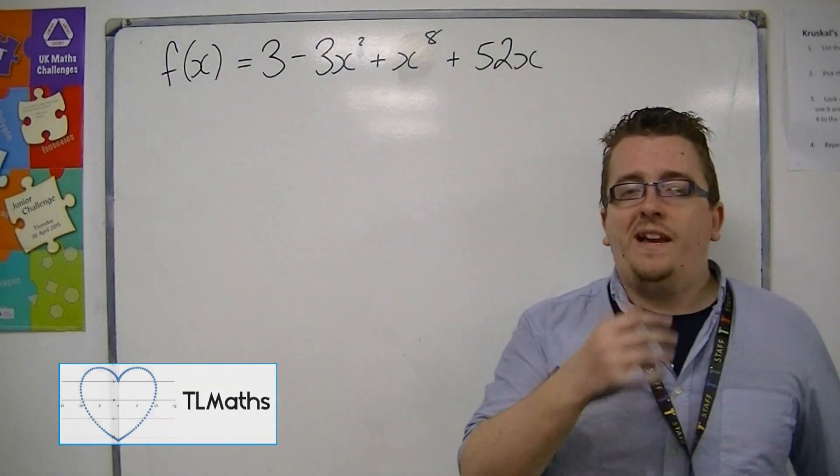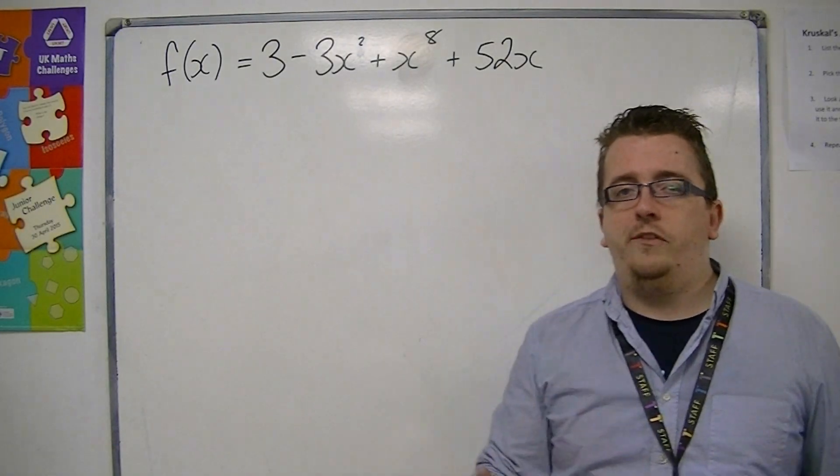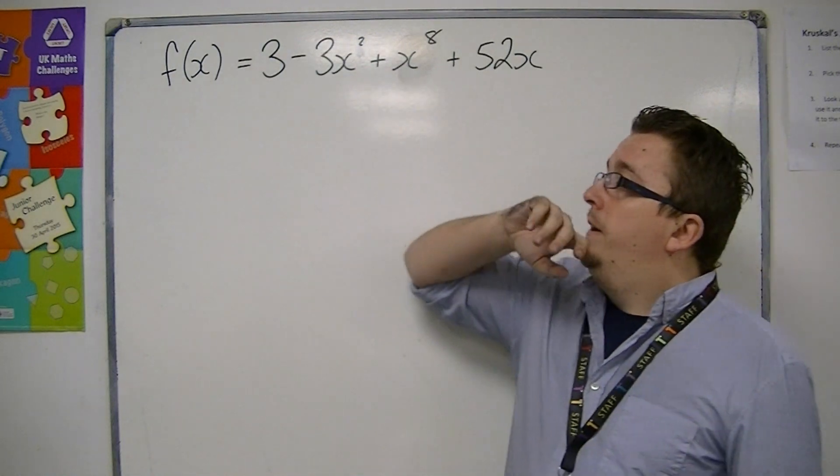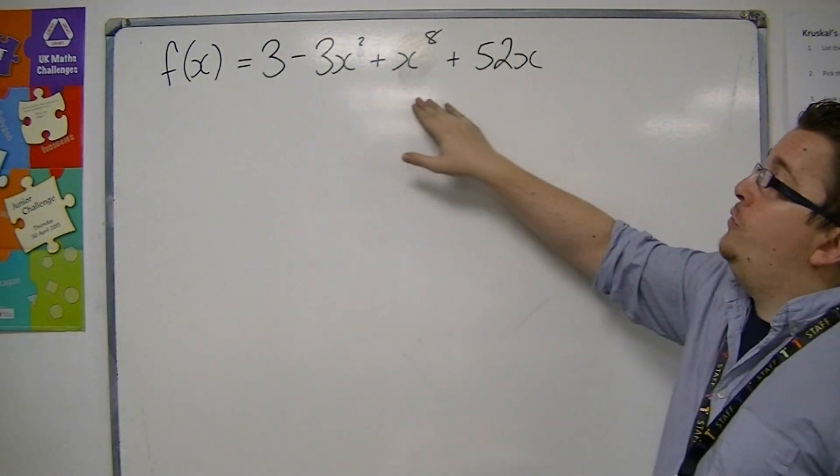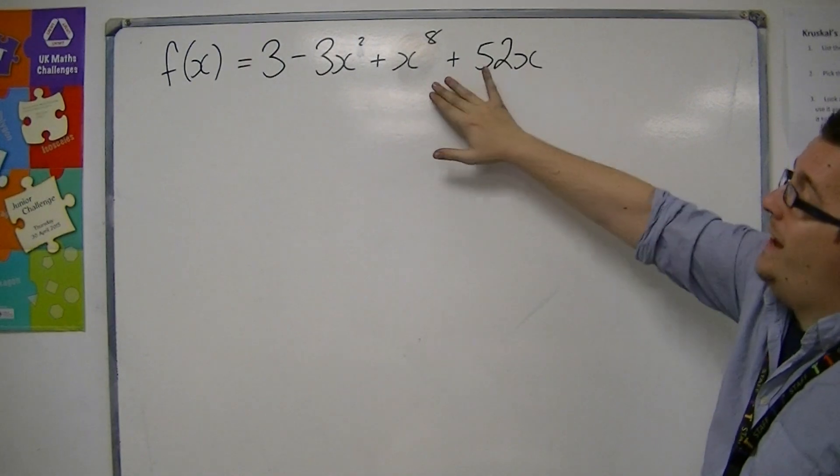In a previous video, we've looked at function notation concerned with differentiation. Let's say we've got f(x) equals 3 minus 3x squared plus x to the 8 plus 52x.